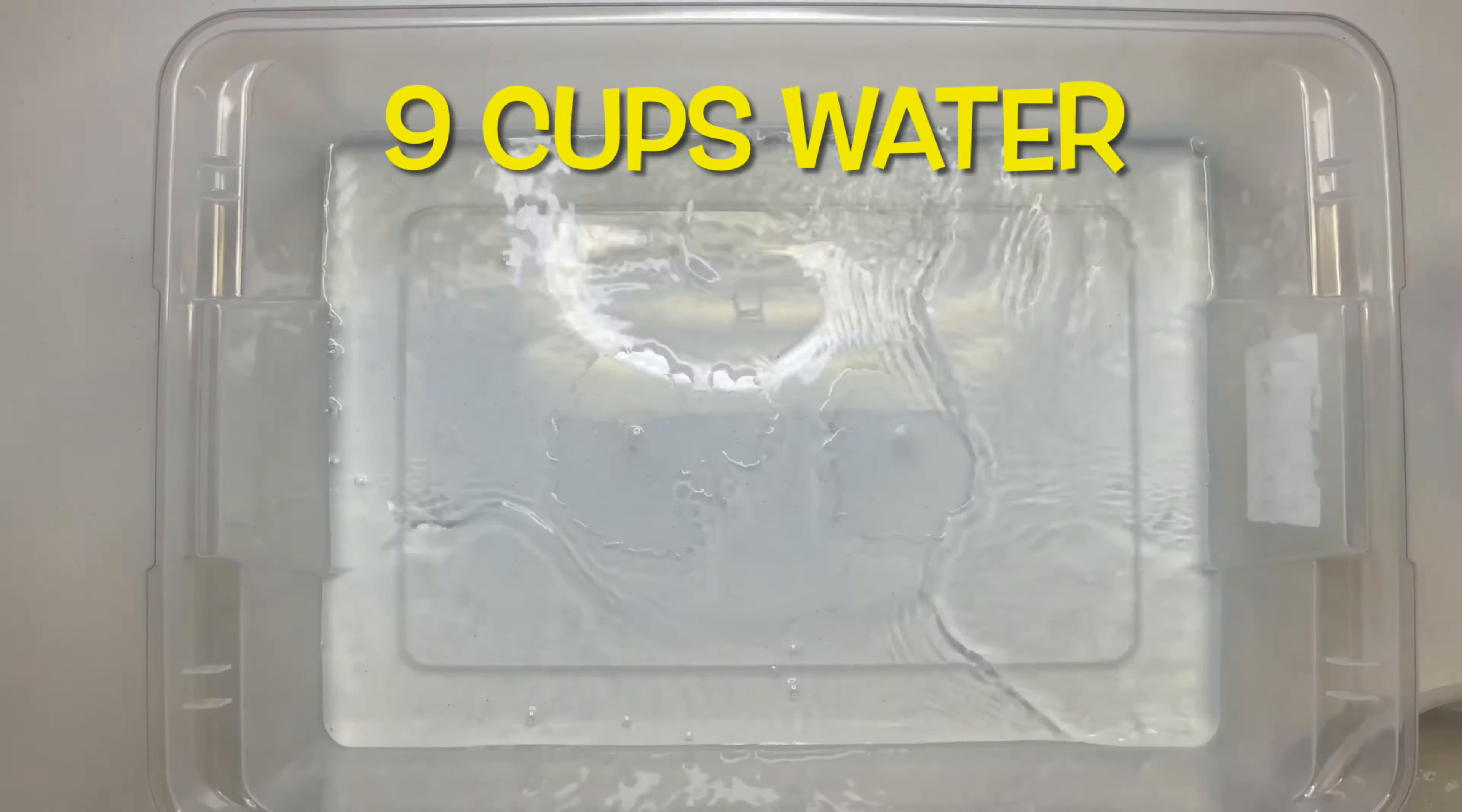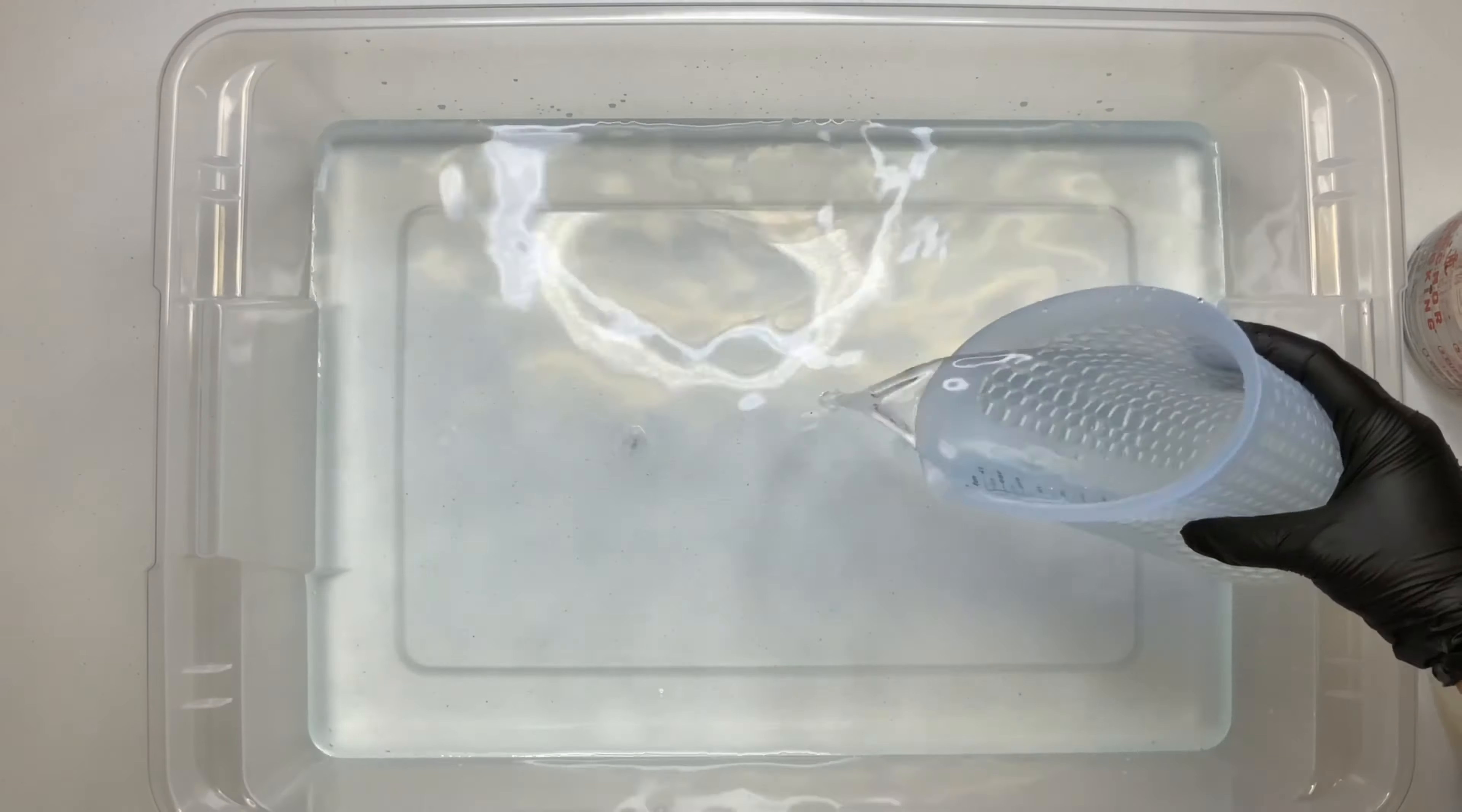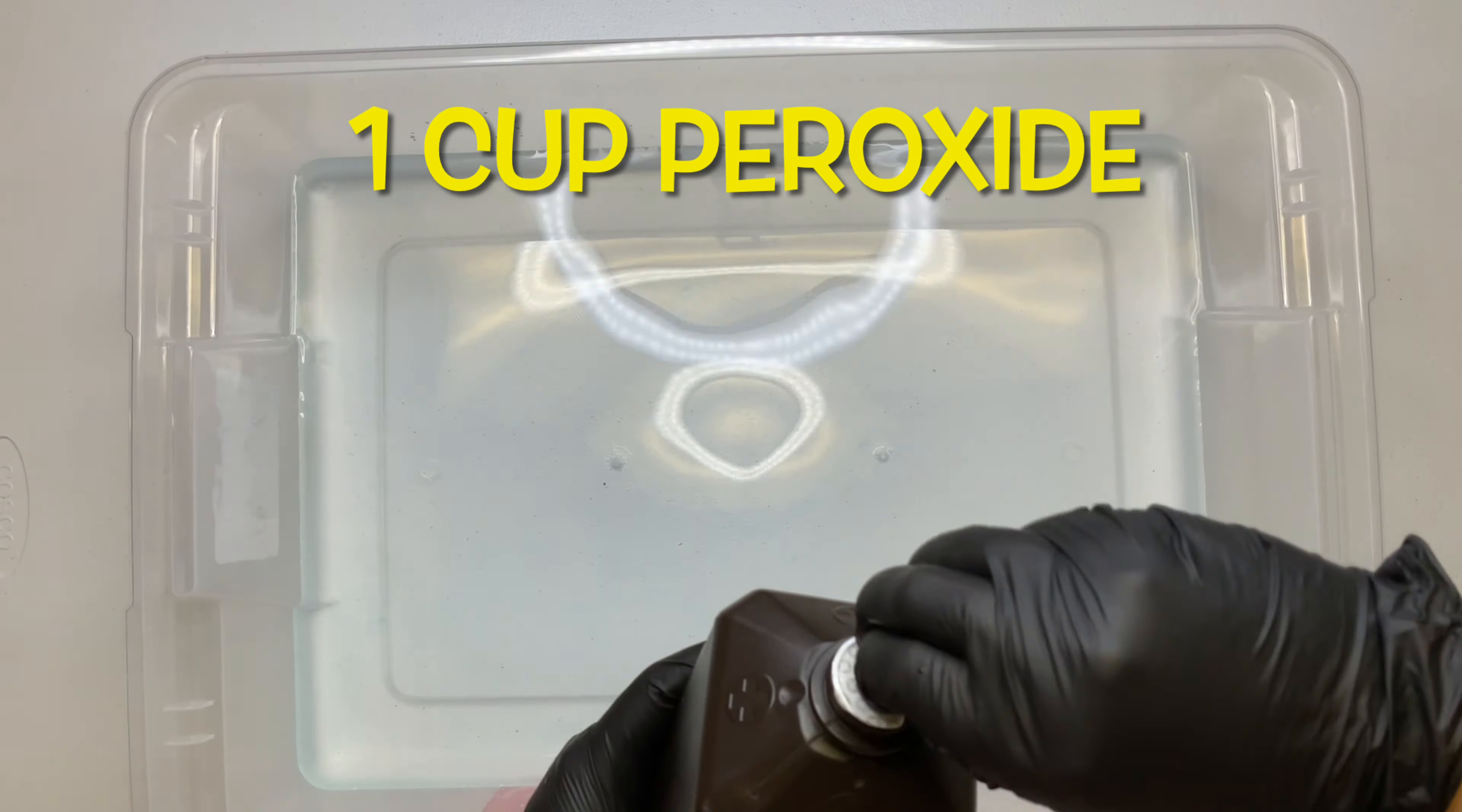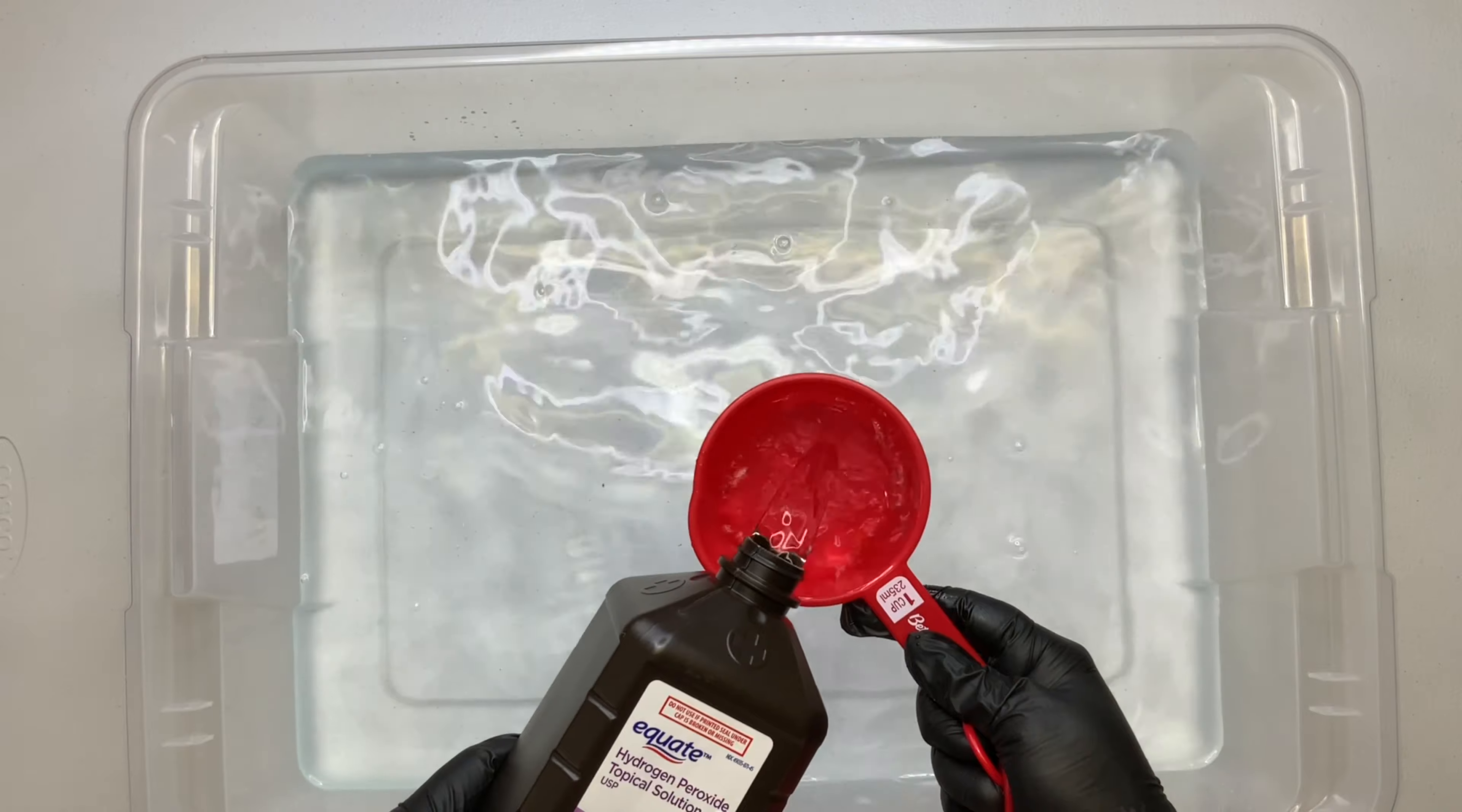When you work with bleach to do reverse dyes, you need to neutralize it afterwards. And the recipe for this is 9 cups of tap water to 1 cup of peroxide. I'm making a double batch, so you're seeing me do 18 cups of water and 2 cups of peroxide. The reason for that is because my tote is large, and so I needed it to be deep enough to submerge the shirts.